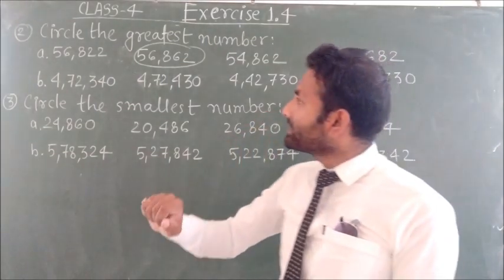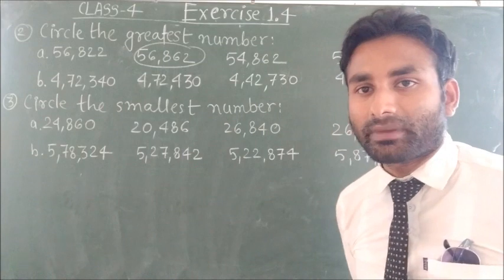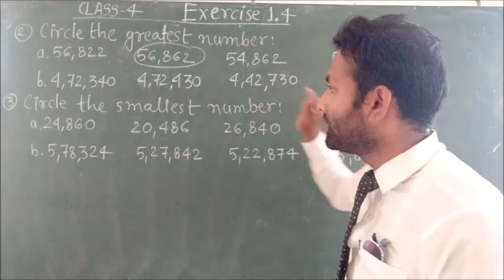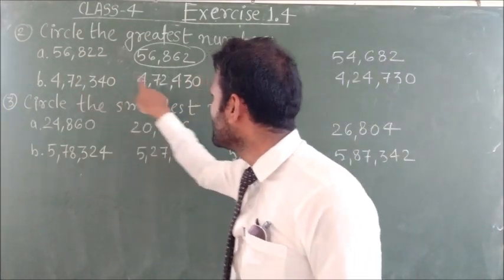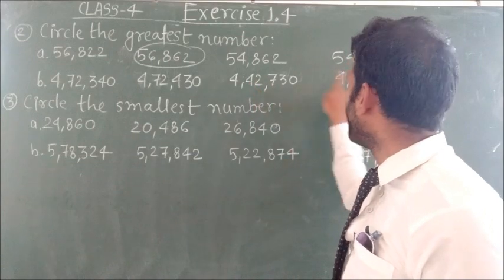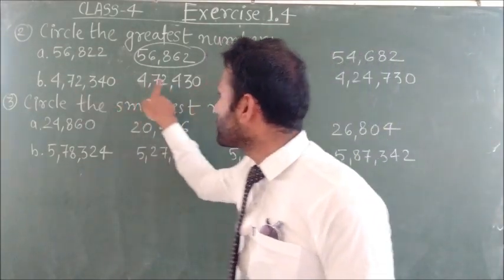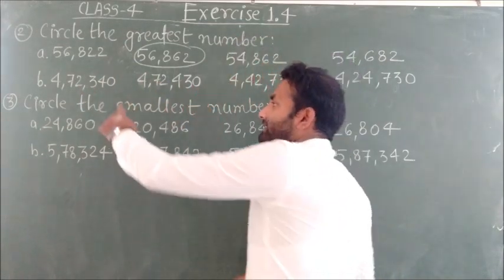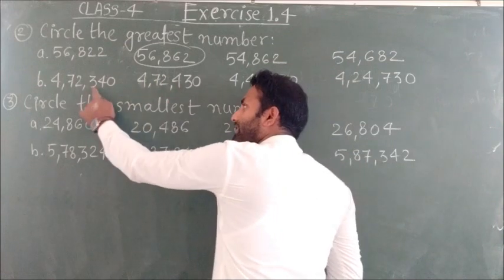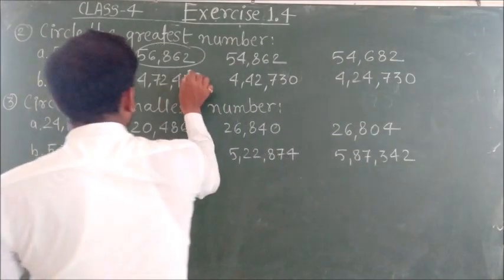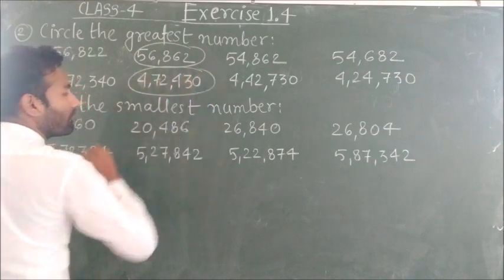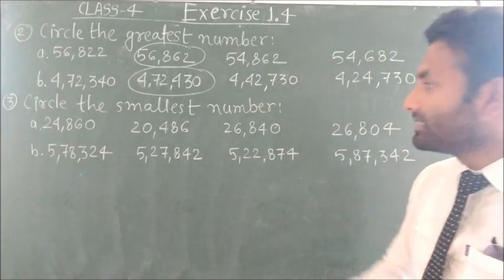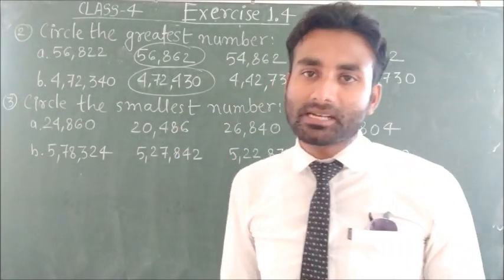Basically for the greatest number, we compare the digits. In the numbers 4,72,730 and 4,72,430, the first three digits are common: 4, 7, 2. Next digit is 7 vs 4, so 7 is bigger. Therefore 4,72,730 is the biggest number.